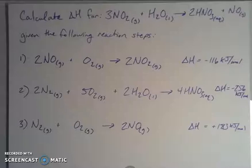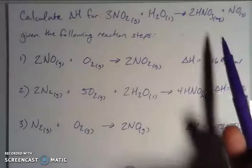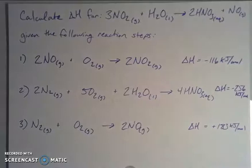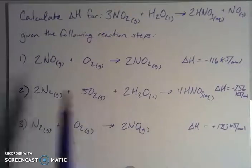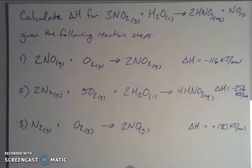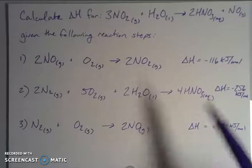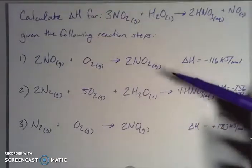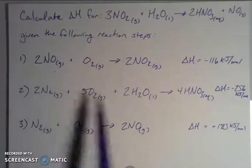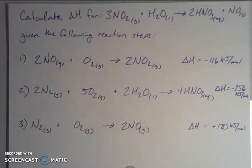Hess's Law for heat summation says that we can add together stepwise chemical processes, so long as they have the right substances on the right sides, to reach a target reaction. We manipulate the steps and do the same thing to the enthalpies — the delta H — then add together all the delta H values to solve for the delta H of the target reaction. My general strategy is to look at the target reaction, identify unique features, then look at the given steps and find what's specific to each.